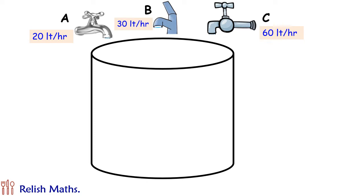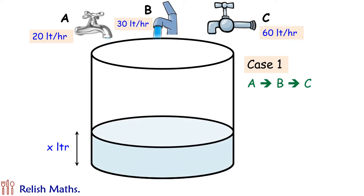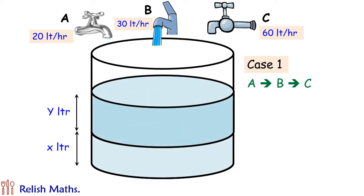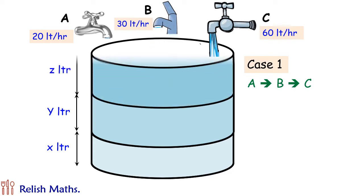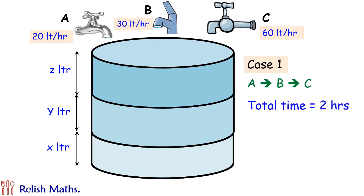In this question, this particular cylinder will be filled up in two different ways. The first case is where tap A is used first. Tap A fills up X liters of tank, then tap B fills up Y liters of tank, and then tap C fills up Z liters of tank. Together they take 2 hours to fill up.